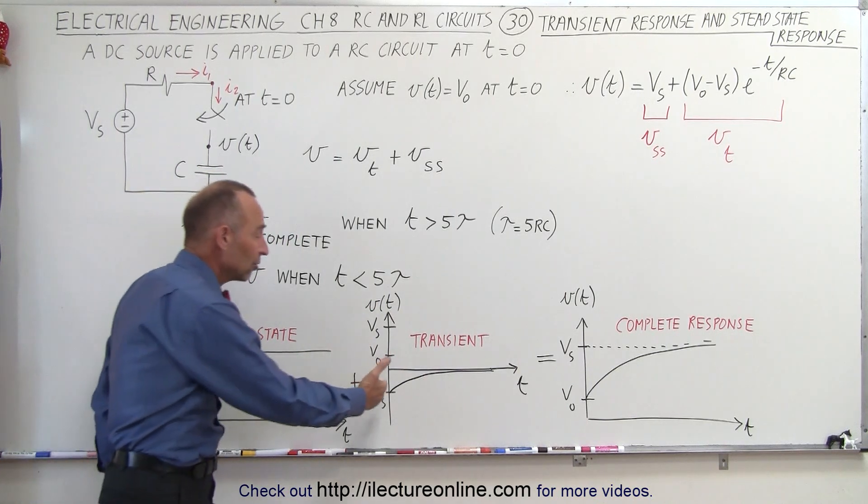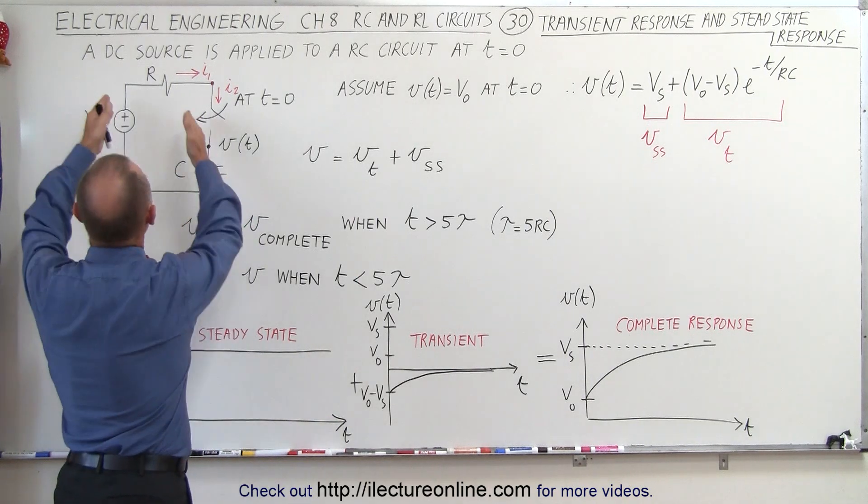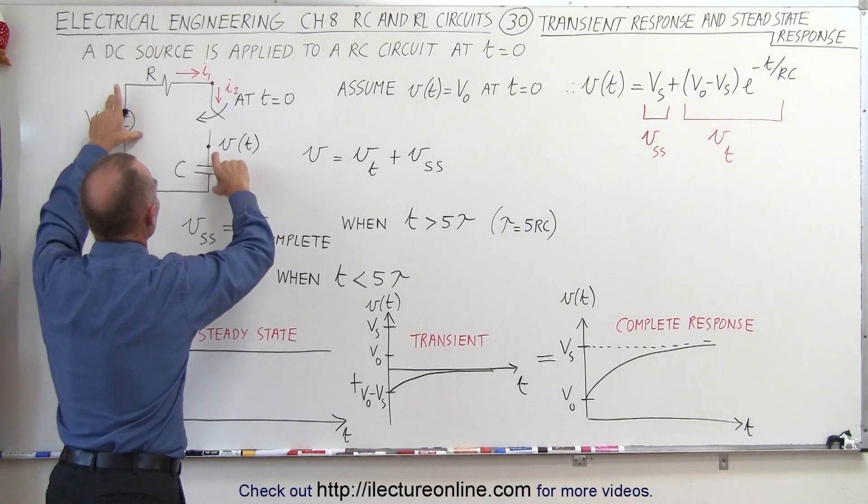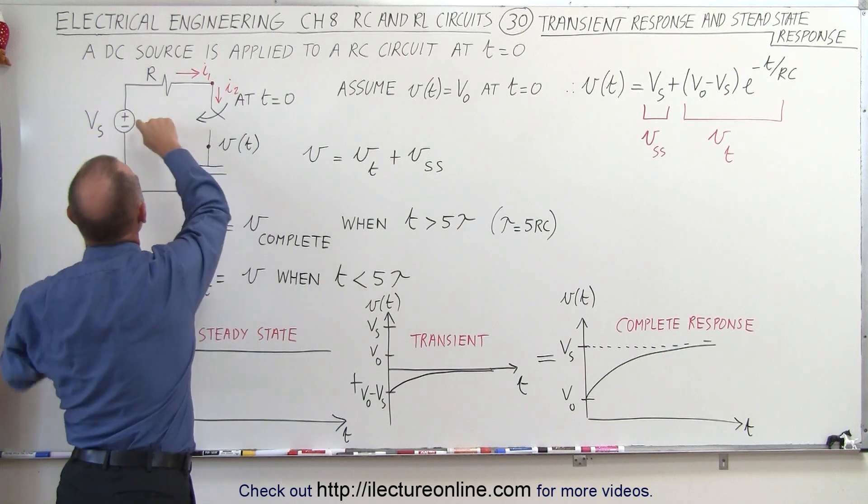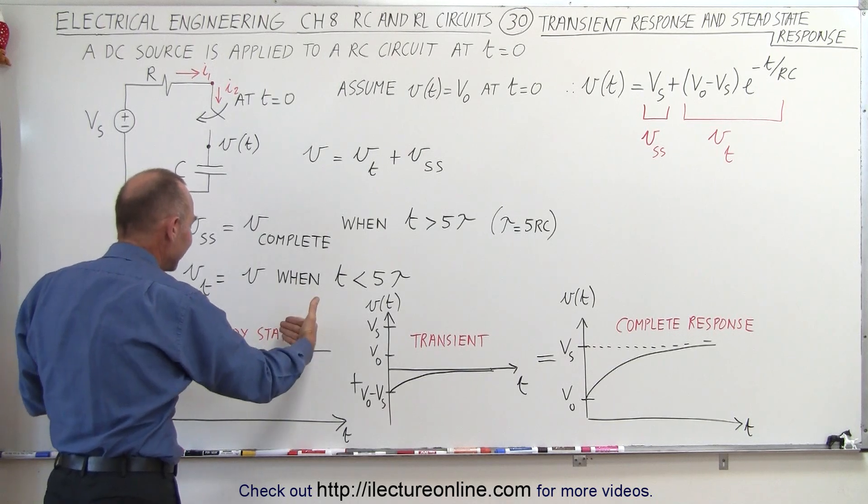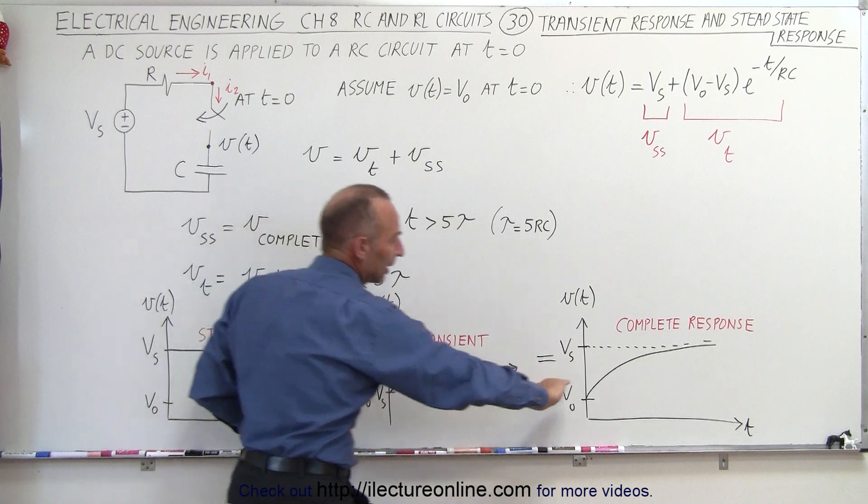It does indeed look like there's a negative voltage, but what happens is, we apply the source to the circuit, and until the voltage across the capacitor reaches the voltage of the source, in essence, we take the steady-state and we add a negative voltage to it that eventually goes to zero to get the real, complete response of the circuit.